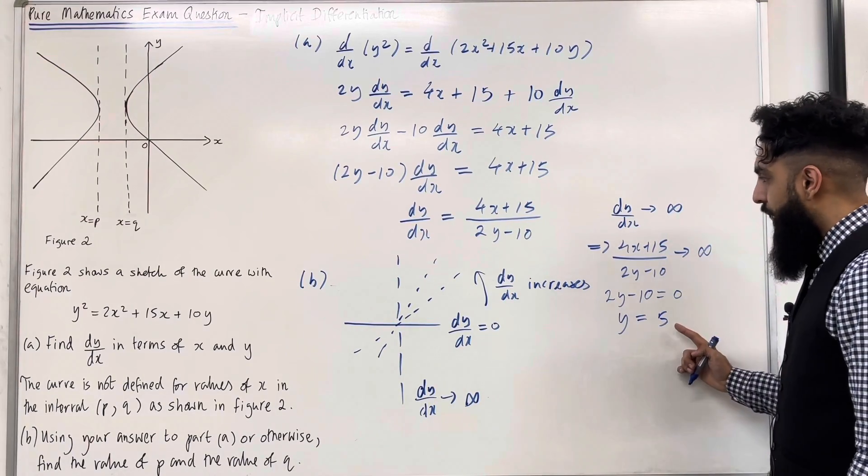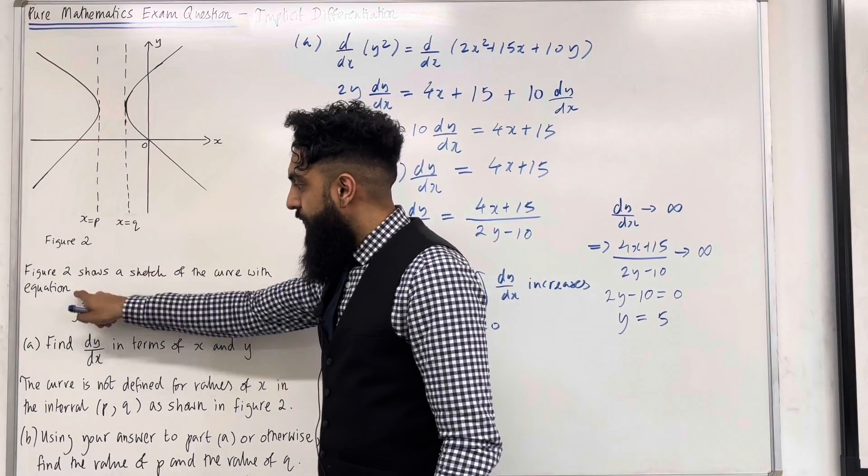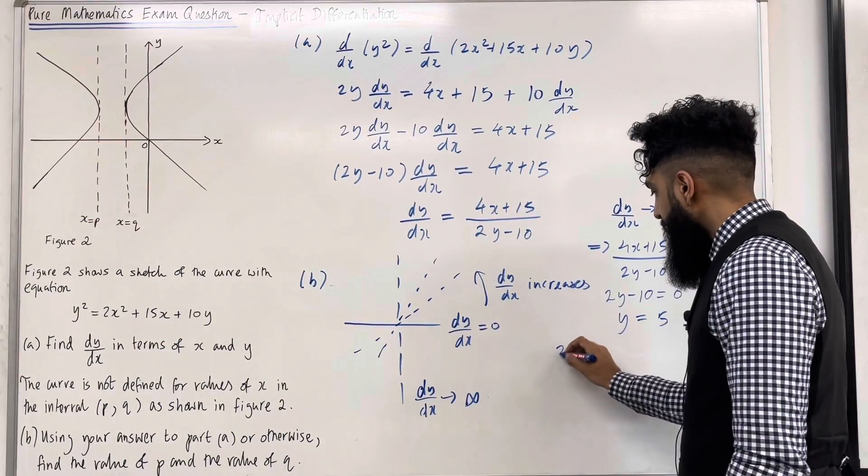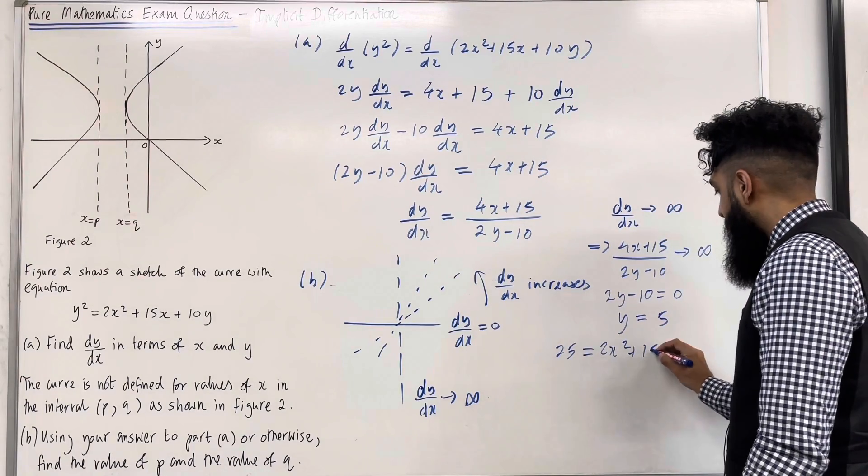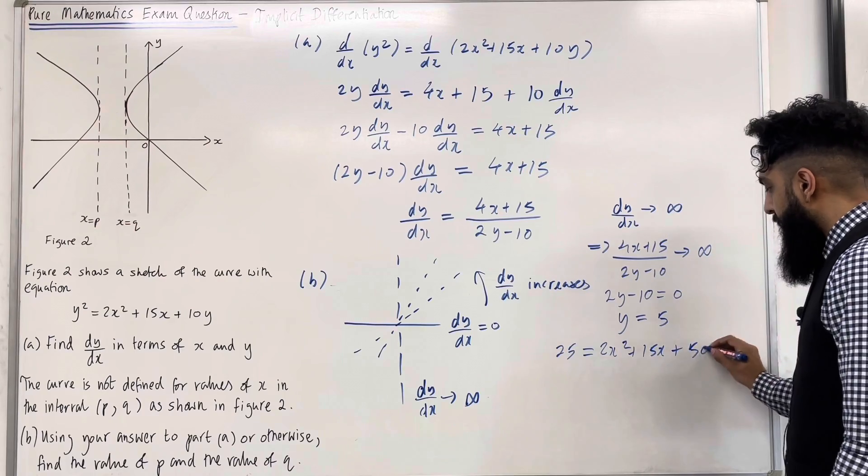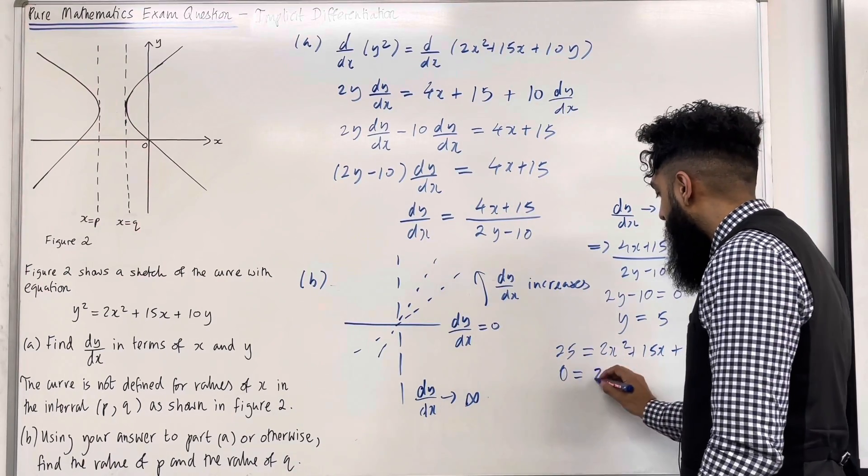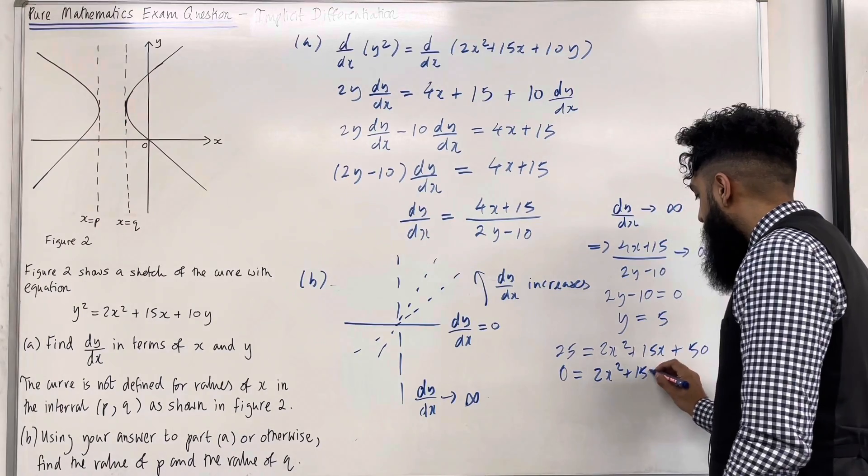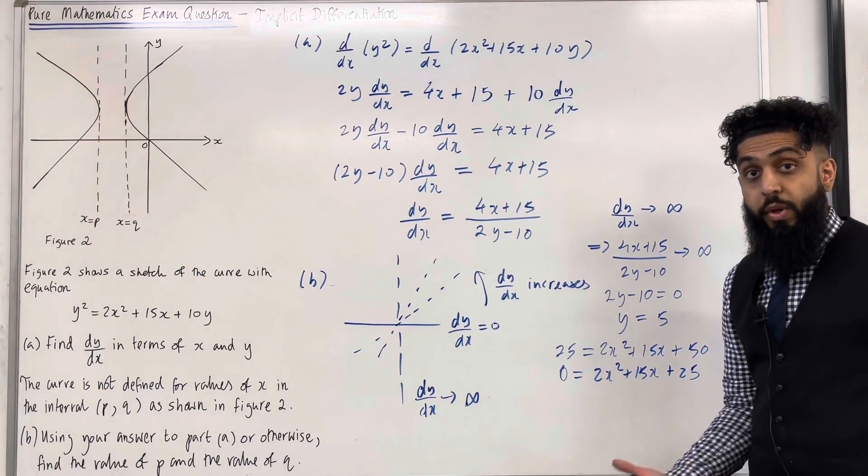I can substitute y equal 5 into this particular equation. So we would have 5 squared, which is 25, equal 2x squared plus 15x plus 10 multiplied by 5, which is 50. Take the 25 to the right hand side. This gives me 0 equal 2x squared plus 15x plus 25 quadratic equation.